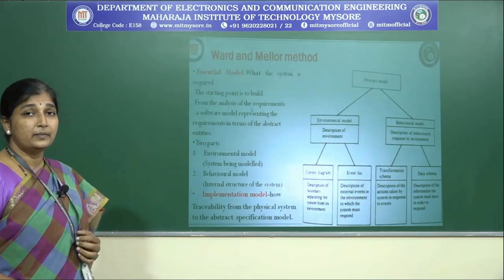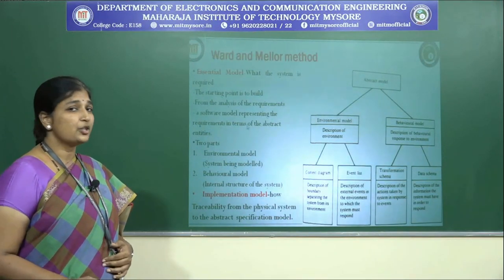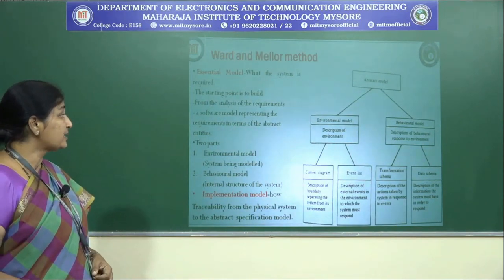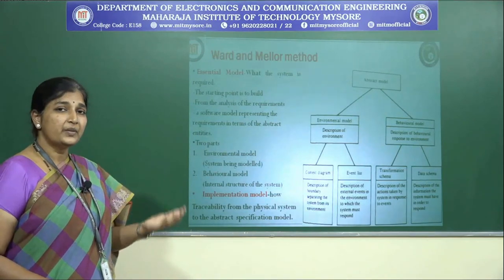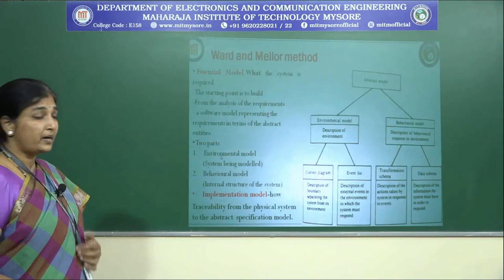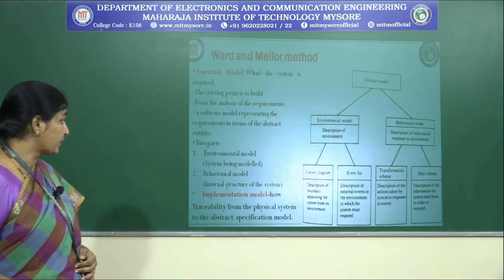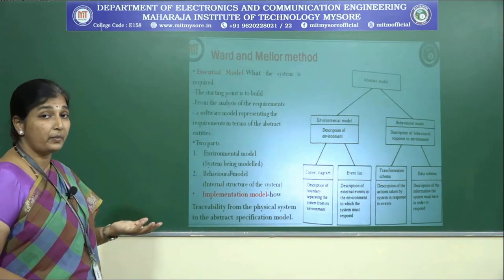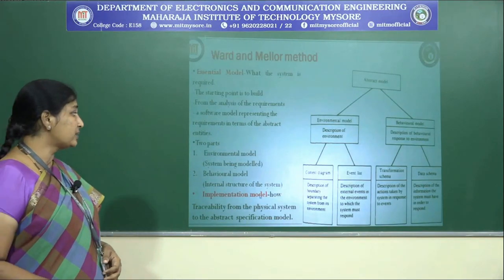This covers how a complete component gets dried in a simple drying oven. Coming to the Ward and Miller method, there are what are called essential models. The essential model states the system requirements, and the starting point is to build a software model representing requirements in terms of abstract entities. It has two important parts: the environmental model and the behavioral model. The environmental model models the system based on the environment, while the behavioral model focuses on the internal structure of the system.